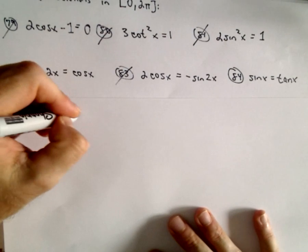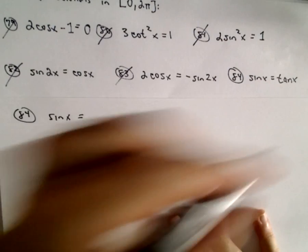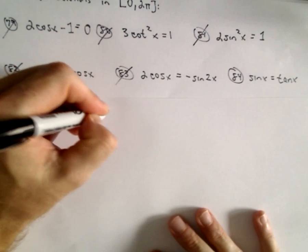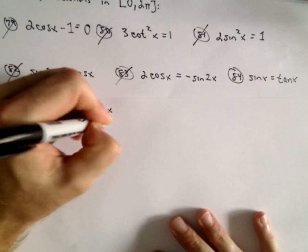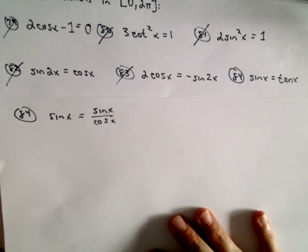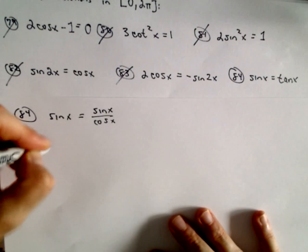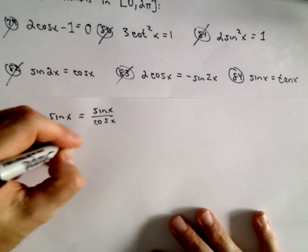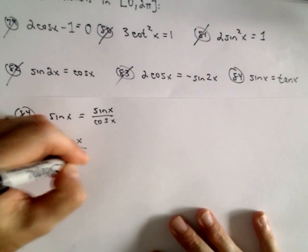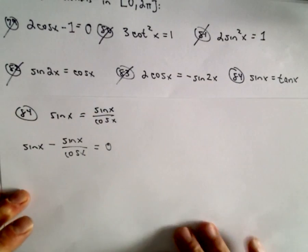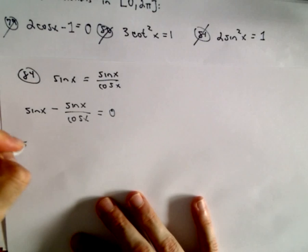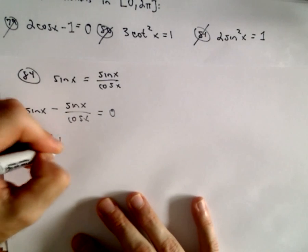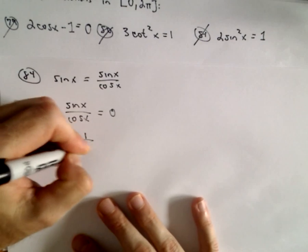x equals tangent x. I'm going to start off by writing tangent x is sine x over cosine x. And just like we've been saying, make one side of the equation zero so I'm going to subtract the sine x over cosine x from both sides. And again, we just factor so we could factor out sine x. We would have 1 minus 1 over cosine x